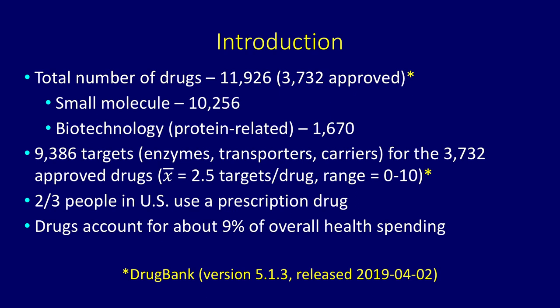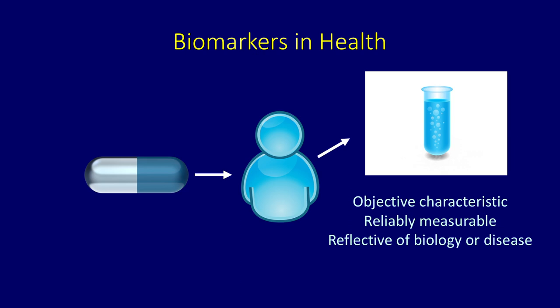The first topic relates to biomarkers in health. When we administer a drug to a patient, we need to be able to measure something accurately, objectively, and reliably. That is called a biomarker. Ideally, a biomarker should be reflective of the actual biology going on in the human, or the disease itself.